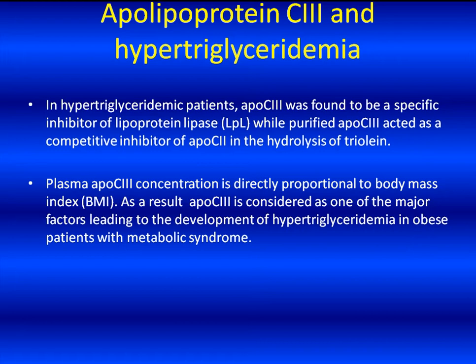In addition to the role of ApoC3 in the development of hypertriglyceridemia, recent studies suggested a direct link between plasma ApoC3 levels and the development of other conditions associated with metabolic syndrome. Specifically, it was found that ApoC3 levels in plasma show a direct correlation with body mass index and insulin resistance. Furthermore, studies in humans show that accumulation of ApoC3-containing VLDL and chylomicrons in plasma are strong predictors of coronary heart disease.